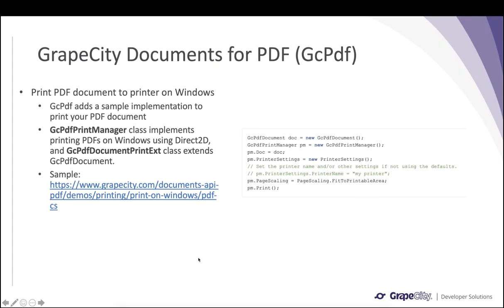In this release, we have also included a sample to help you print a PDF document directly to a printer. This sample is supported on Windows platform. It makes use of the GcPdfPrintManager class, which implements printing PDFs on Windows using Direct2D technology. It also makes use of the GcPdfDocumentPrint extension class, which provides the print method to print your document. The GcPdfPrintManager class includes printer settings that you can apply programmatically before sending the document for printing, so you don't have to manually configure those settings through an application.